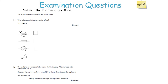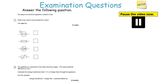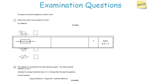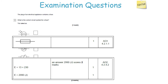Next question. The plug of an electrical appliance contains a fuse. What is the correct circuit symbol for a fuse? The appliance is connected to the mains at 230 volts. Calculate the energy transferred when 13 coulombs of charge flows through the appliance. You must memorize your key circuit symbols — the fuse has a specific symbol. For the energy calculation: 13 times 230 equals 2,990 joules. Show your working out and check the answer.